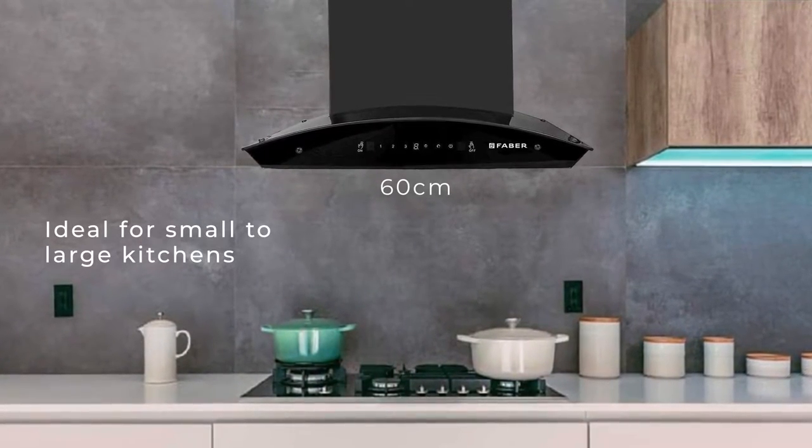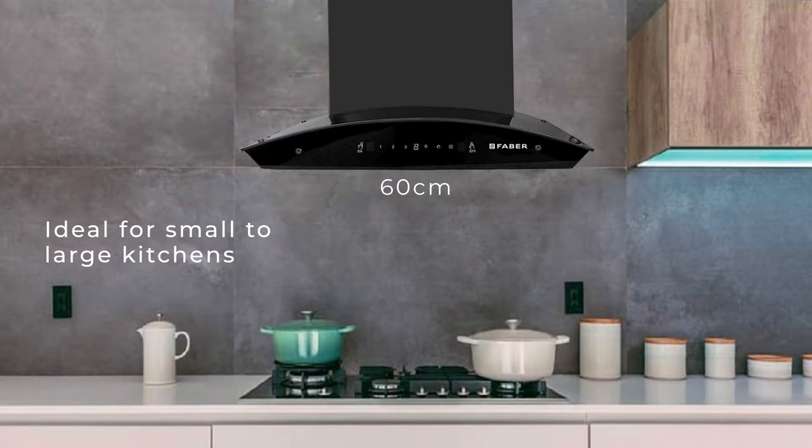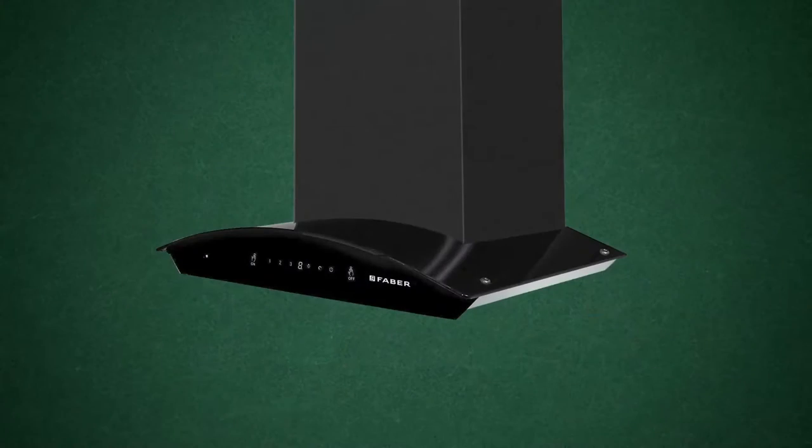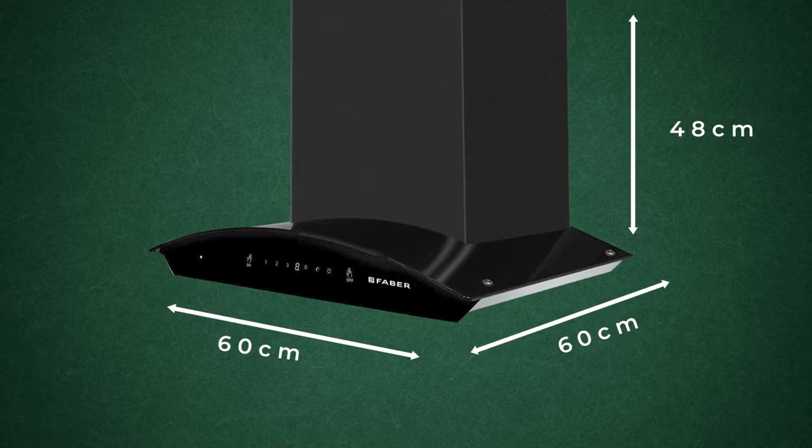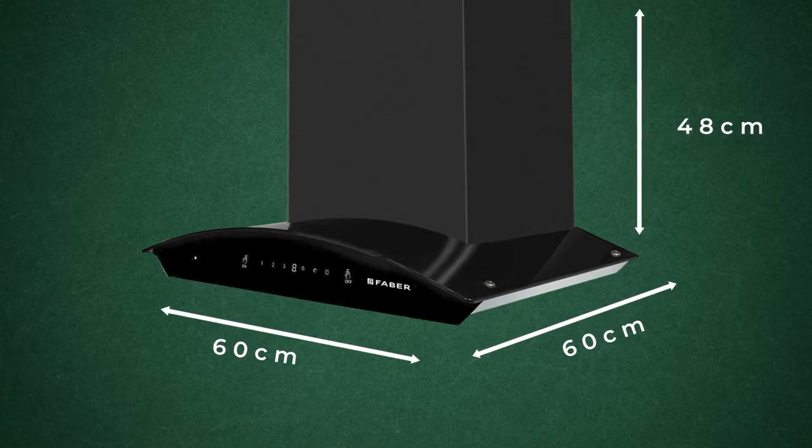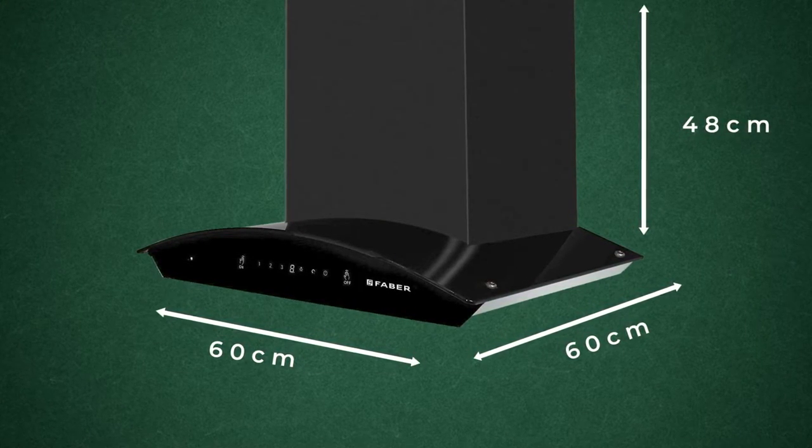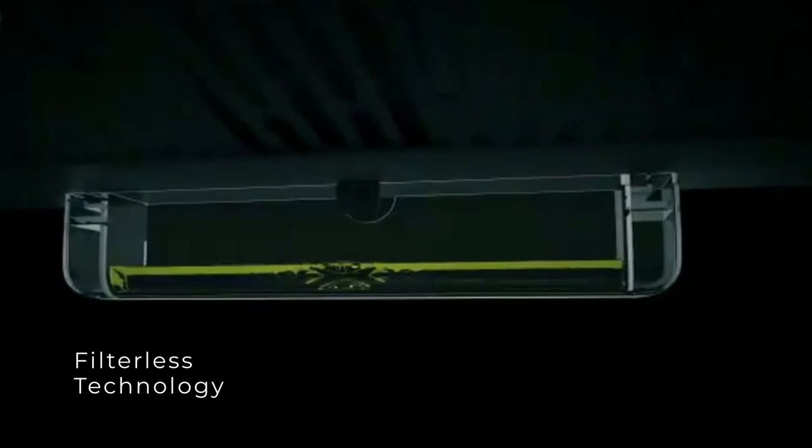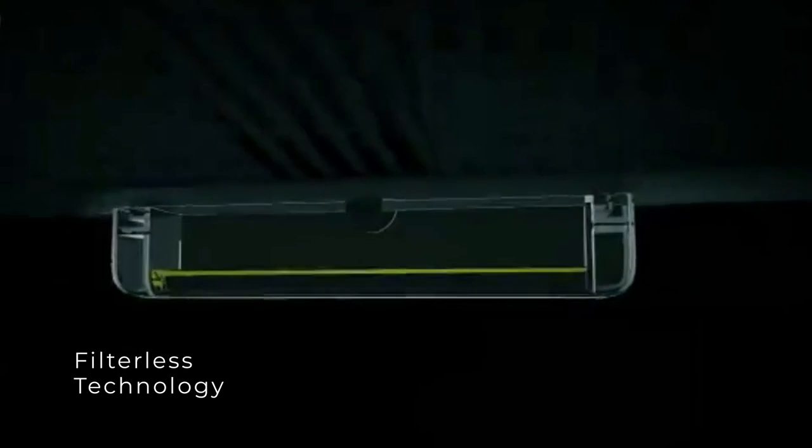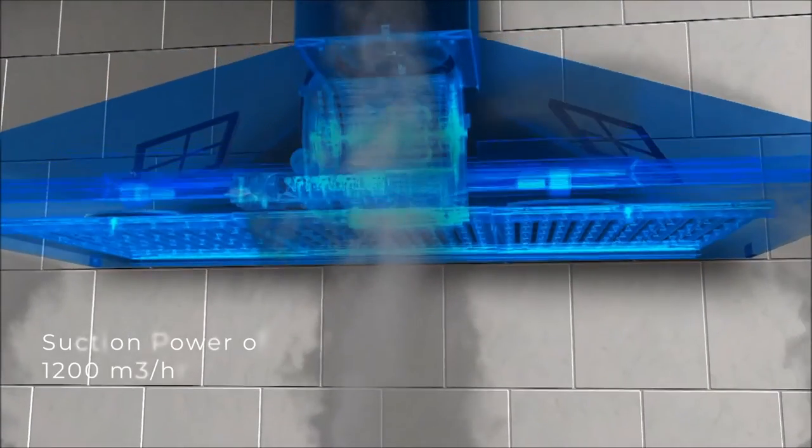centimeter and 90 centimeter width, ideal for small to large kitchens. The 60 centimeter chimney measures 50 centimeter in length, 60 centimeter in width, and 60 centimeter in height. Filterless chimney is the next generation of auto clean chimney from Faber.